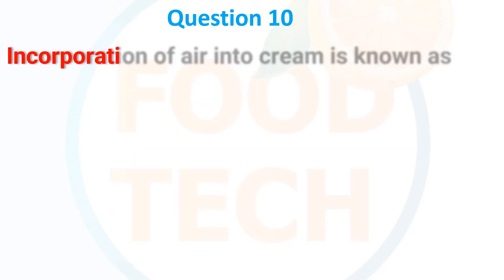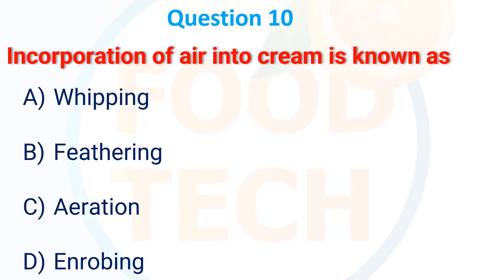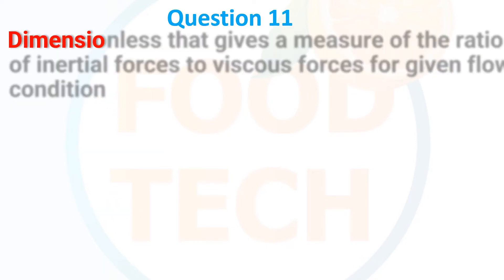Next MCQ: The incorporation of air into cream is known as what? Options: (A) Whipping, (B) Feathering, (C) Aeration, (D) Enrobing. The correct answer is A — whipping.